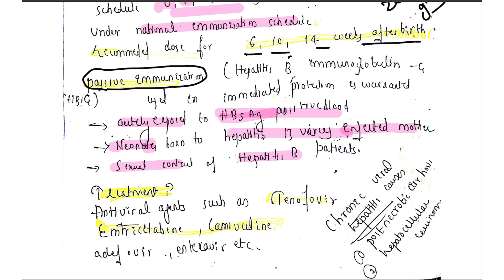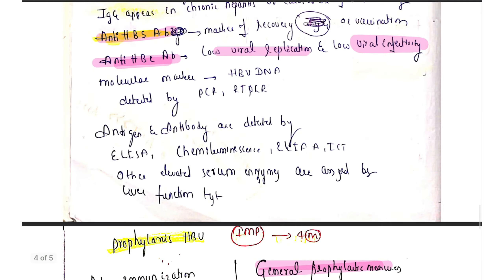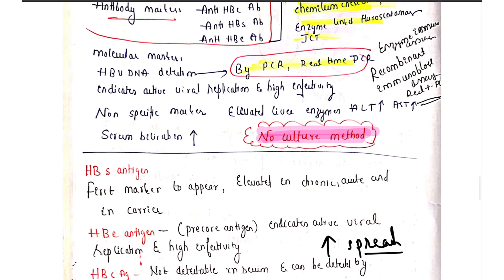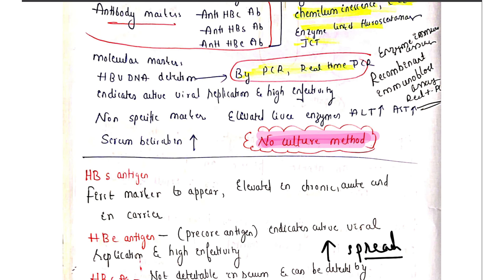For treatment, antiviral agents such as tenofovir, adefovir, and lamivudine are given. This concludes our video about the Hepatitis B virus lab diagnosis and prophylactic measures. If you find this video useful and informative, please subscribe to our channel Daily Doctor. Thank you for watching.